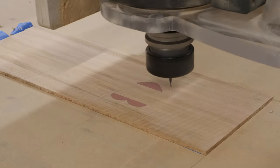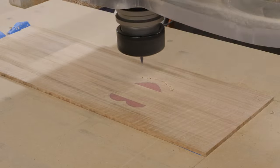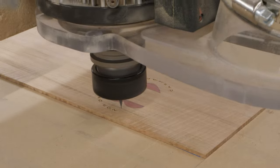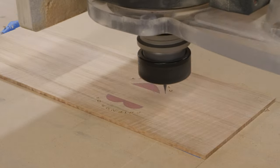For this next step on the CNC, I'm using that same 23 thousandths end mill to cut out all the details. And believe it or not, this took about an hour and a half to complete. So I went ahead and sped it up to save you the time.